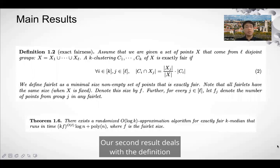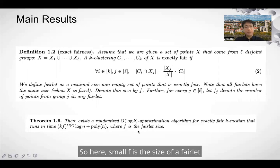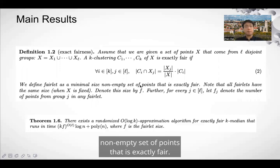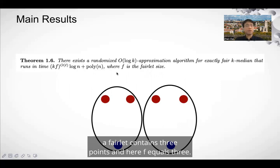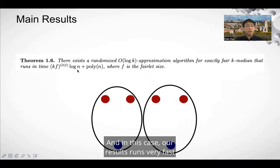Our second result concerns the exact fairness definition. In this case, we can improve our runtimes. Here, small f is the size of a fairlet, where a fairlet is the minimal-size non-empty set of points that is exactly fair. For instance, in the given example a fairlet contains three points, so f equals 3. With this definition, our algorithm runs very fast, essentially dominated by poly(n).